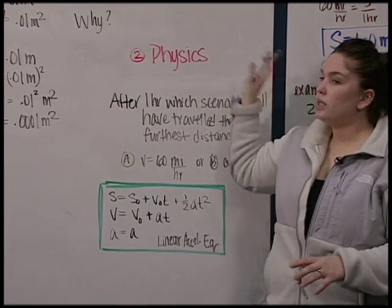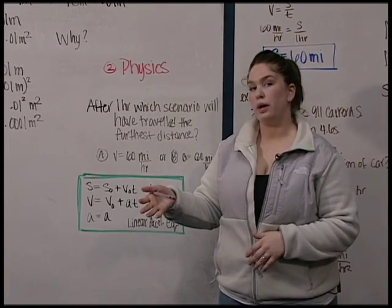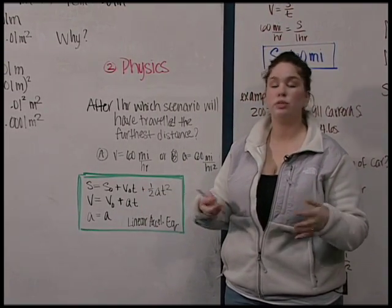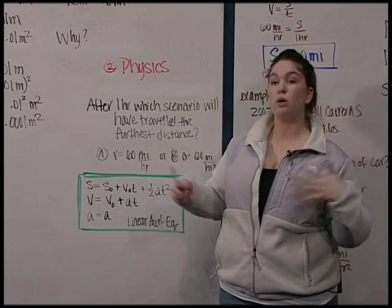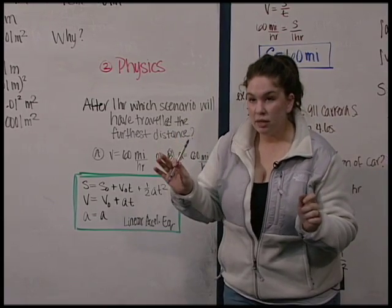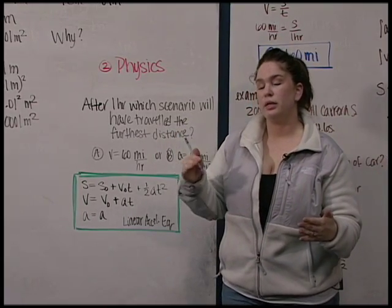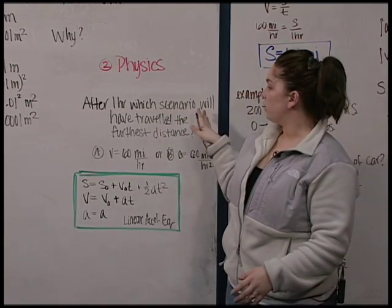So what does it mean to accelerate at 60 miles per hour squared? Most of us have a really good intuition at what it means to go 60 miles per hour, like on the highway, or if you're me, 80 miles per hour. What does it mean though to accelerate at 60 miles per hour squared? If you knew that, you can answer this question very quickly.